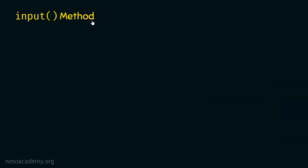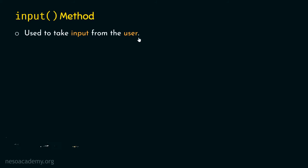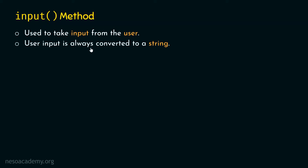What is an input method? Input method is used to take user input. In other words, input method is used to take input from the user. No matter what kind of input it is, we can take input from the user and store it in some variable. We also need to understand that user input is always converted to a string — even though the user has provided an integer value, that will be treated as a string in Python.